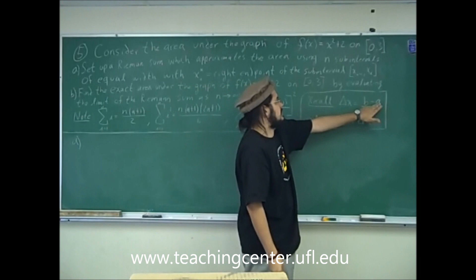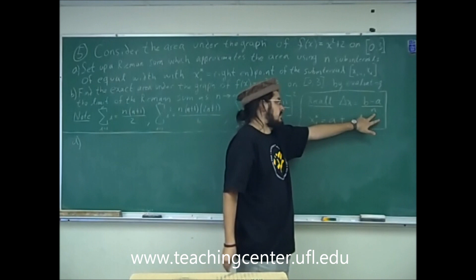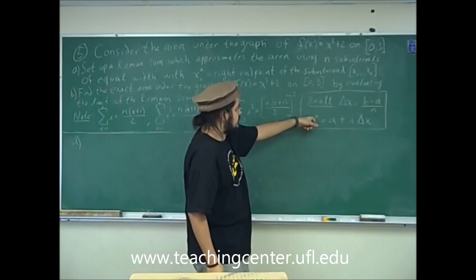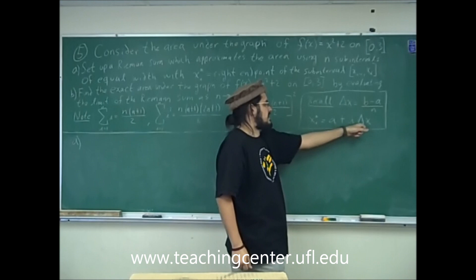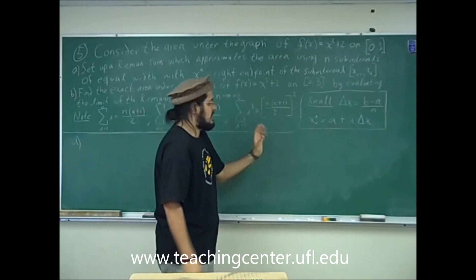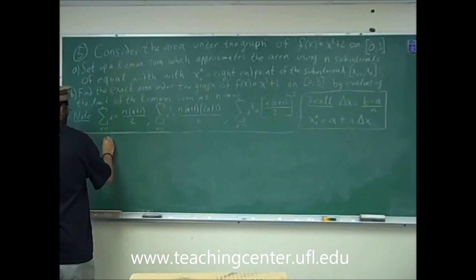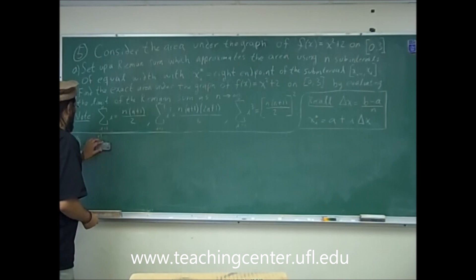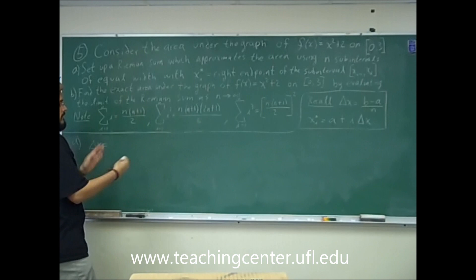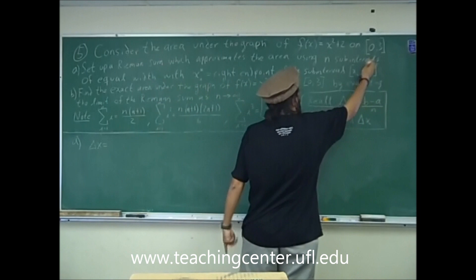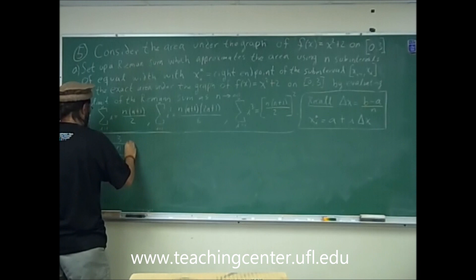The change in x, delta x, is going to be b minus a divided by n, where a is 0, b is 3, and n is the number of subintervals. So that's 3 minus 0, which is 3, divided by n.